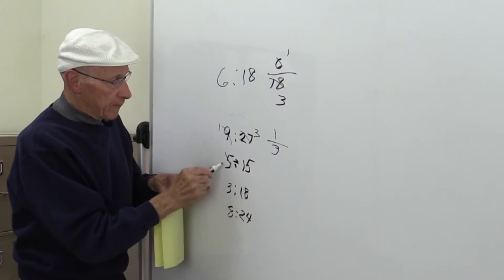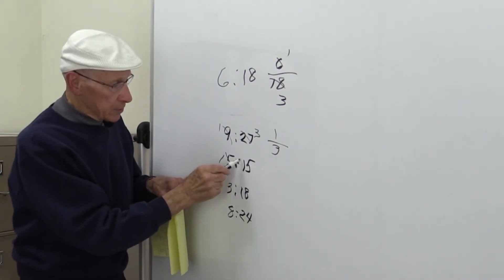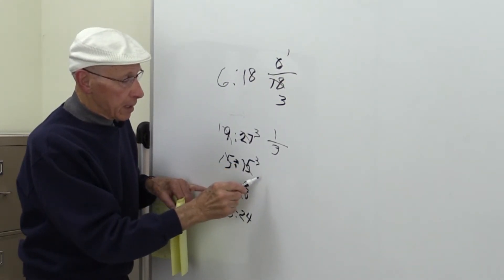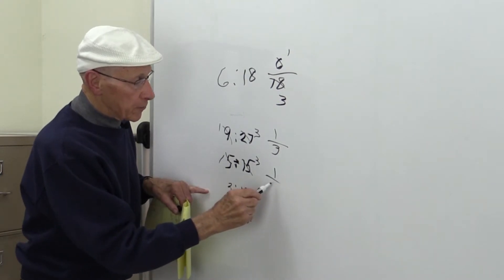This one here, 5 goes into 5 once. 5 goes into 15 three times. Ratio is 1 over 3.